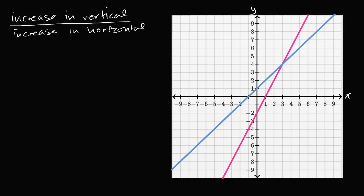Let's look at that magenta line again and start at an arbitrary point where it's easy to identify. If we start right here and increase in the horizontal direction by one — move one to the right — to get back on the line, how much do we have to increase in the vertical direction? We have to increase by two. So for this magenta line, the increase in vertical is two whenever we have an increase of one in the horizontal direction.